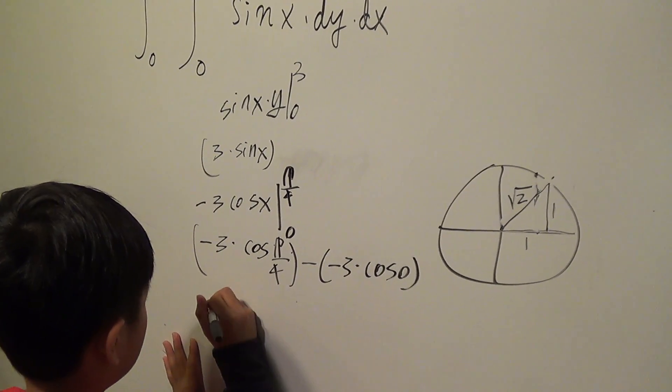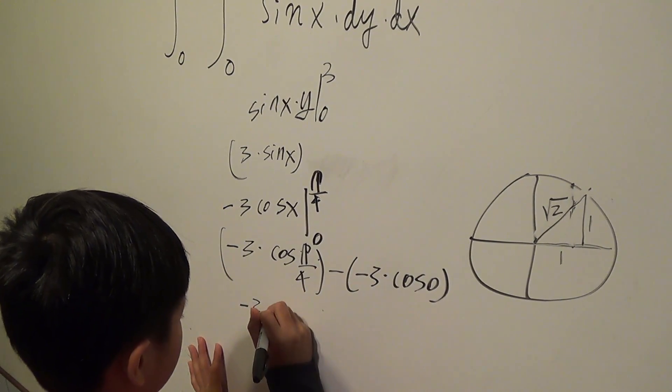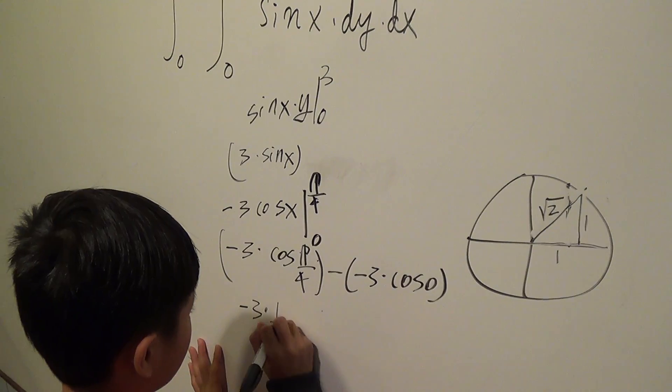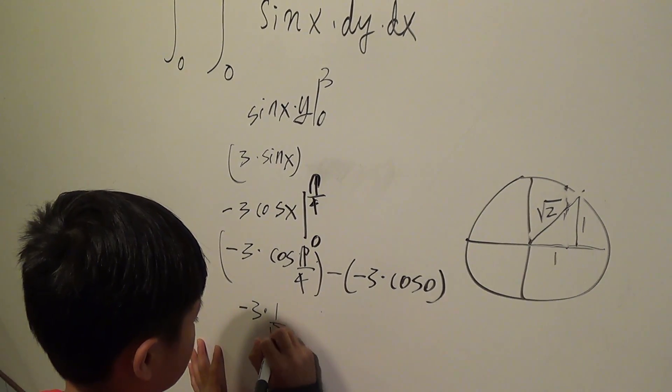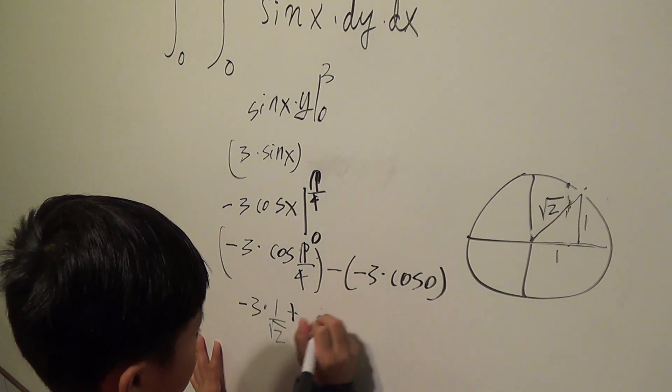So now, cos π over 4 is 1 over square root of 2, and minus and minus is plus, and then 3 copy.